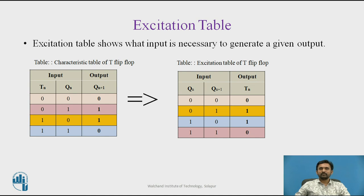Excitation table: there are four possible transitions from present state to the next state. The required input conditions are derived from the information available in the characteristic table. The following table shows the T flip-flop excitation table.